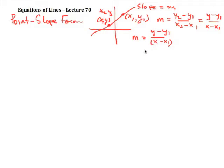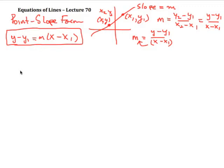We can take this quantity and multiply both sides, which means that we end up with y minus y₁ equals m times x minus x₁. So if I know the slope and I know a point, then I can write my equation in this particular form, which is called the Point-Slope Form.